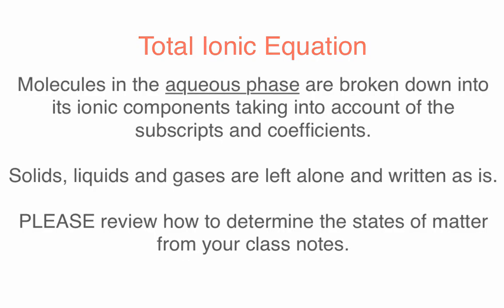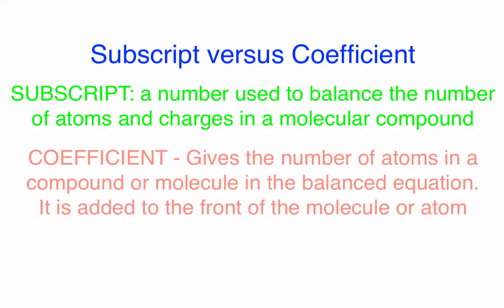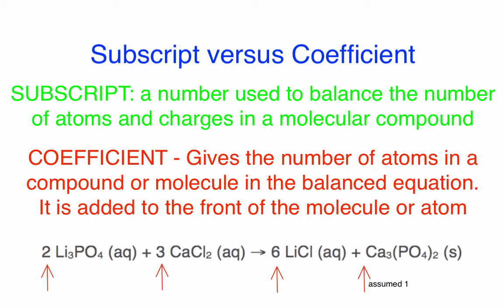Please review your notes so that you have the information to write the equations correctly. You will need to take into account the subscript and coefficient. The subscript is the number used to balance atoms and charges when writing the molecular compound — you use subscripts to balance the charges. The coefficients, on the other hand, are the numbers added to the front of the molecules or compounds to balance the equation.